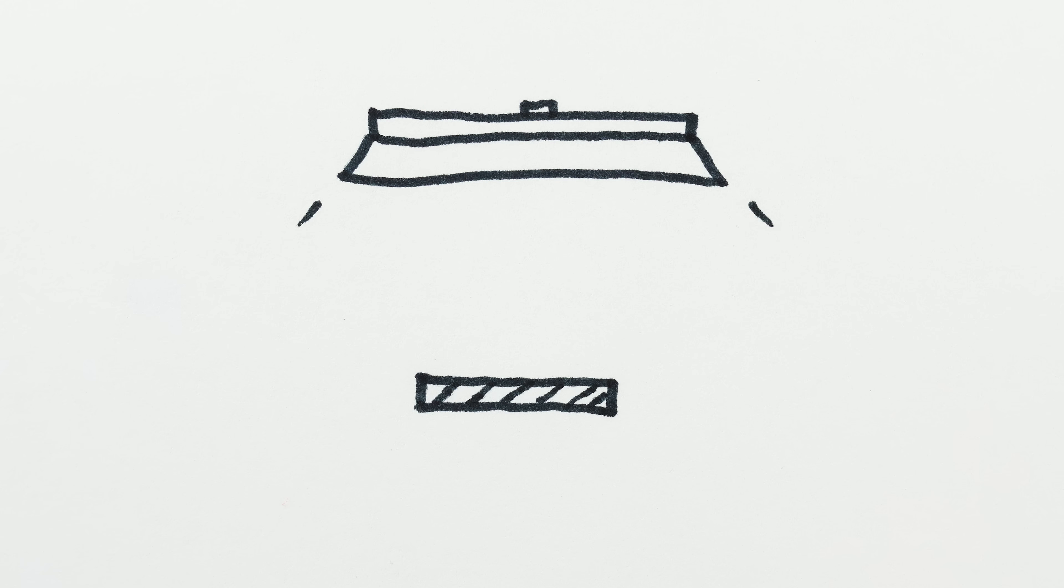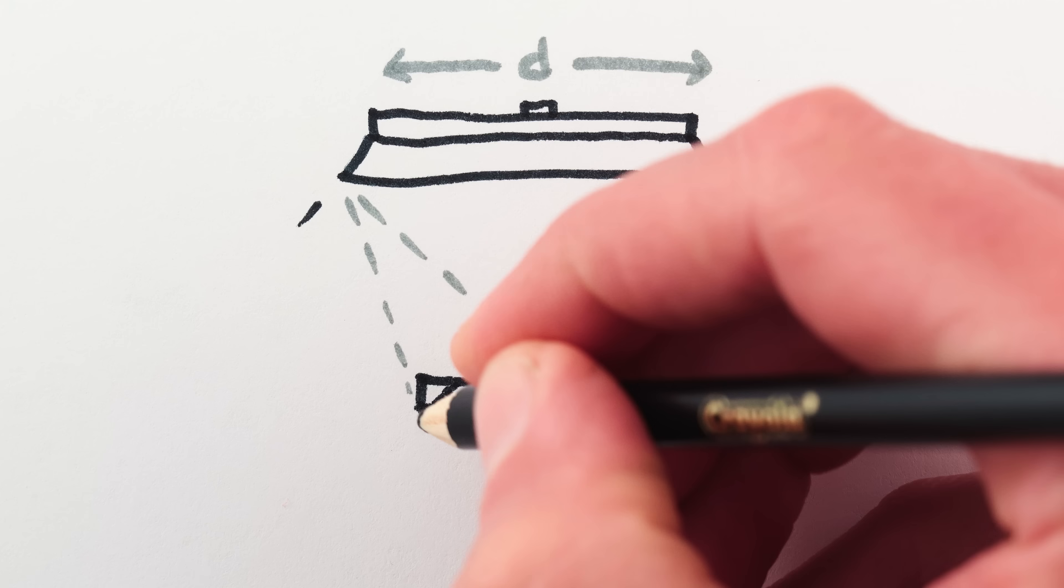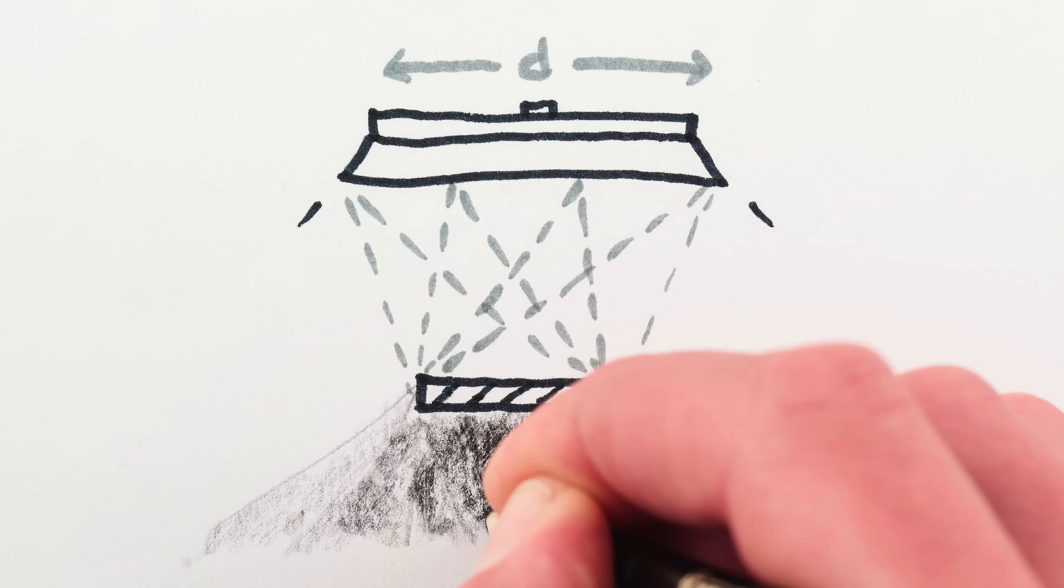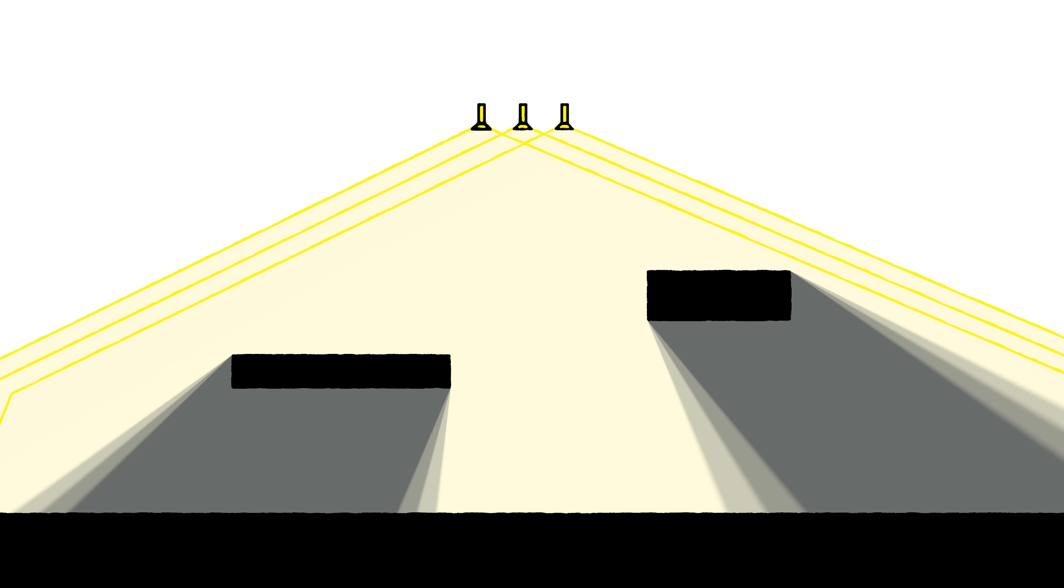But it gets interesting if the light source isn't a point but has actual size, because then the different parts of the light source cast slightly different shadows, which overlap and combine to create a blurred shadow. You can see this if I turn on first one light, then another, then another. Multiple shadows blur together into one blurry shadow.